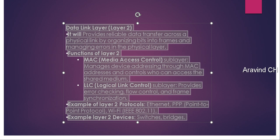Data Link Layer, Layer 2. It provides reliable data transfer across a physical link by organizing bits into frames and managing errors in the physical layer.